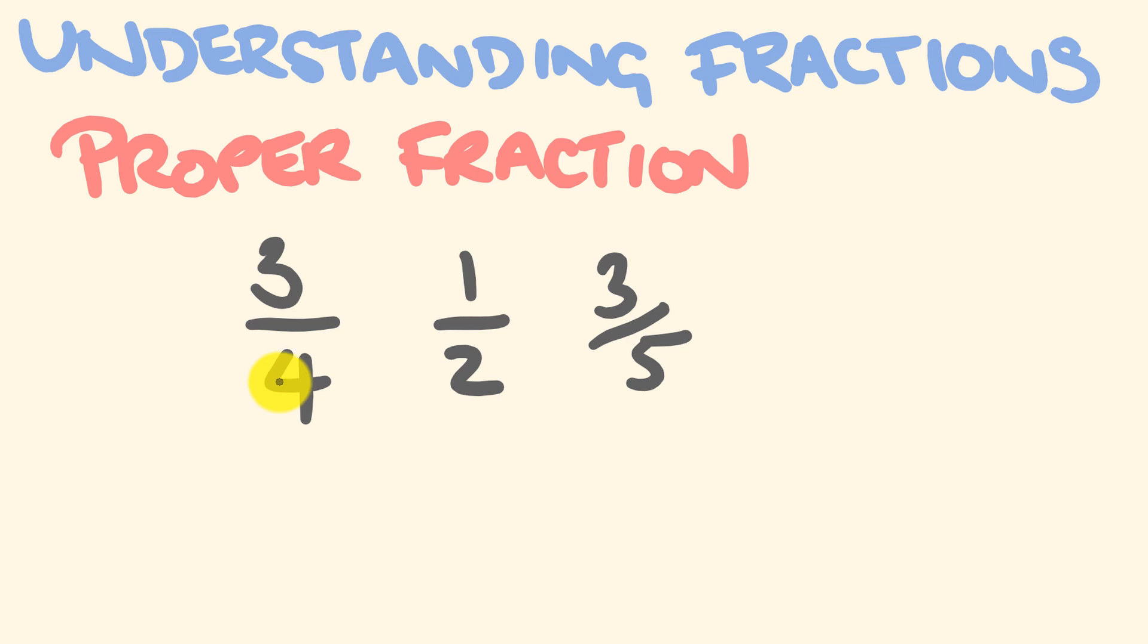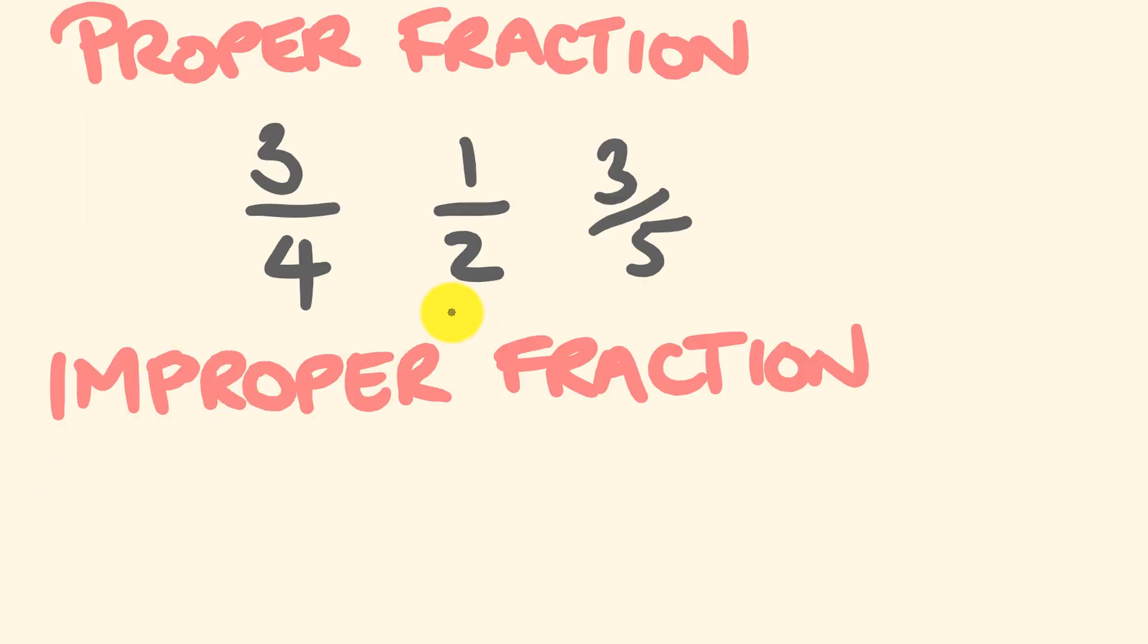However, we have another type of fraction, which is important to know, which is called an improper fraction. So improper fractions as opposed to proper fractions are fractions where our denominator is bigger than our numerator. An example for this might be four over three. Four out of three. And you might think that's a bit counterintuitive. How can you have a bigger number out of a smaller number? Or you might have something like five out of two. Any time that you have this numerator bigger than the denominator, you have yourself an improper fraction.